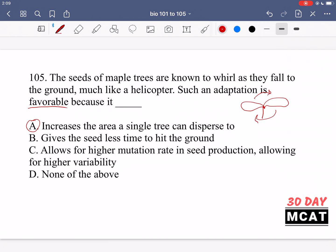So A, it increases the area a single tree can disperse to. Yes, this is true. B, it gives the seed less time to hit the ground. No, it gives them more time because they're in the air for longer. C, allows for a higher mutation rate in seed production, allowing for a higher variability. No, it is correct that a higher mutation rate and a higher variability in a population is good for it. But it doesn't really make sense how this kind of twirling of the leaves would lead to mutations arising. It's more so physically what happens is that they spend more time in the air and therefore they can be dispersed further. So A is correct. D saying none of the above. No, that's incorrect. A is actually an answer which is correct and makes sense.